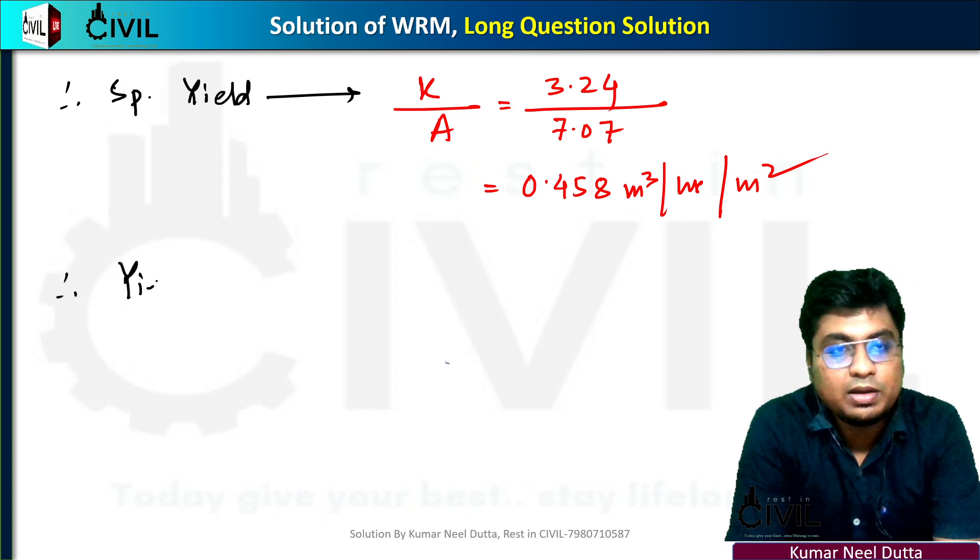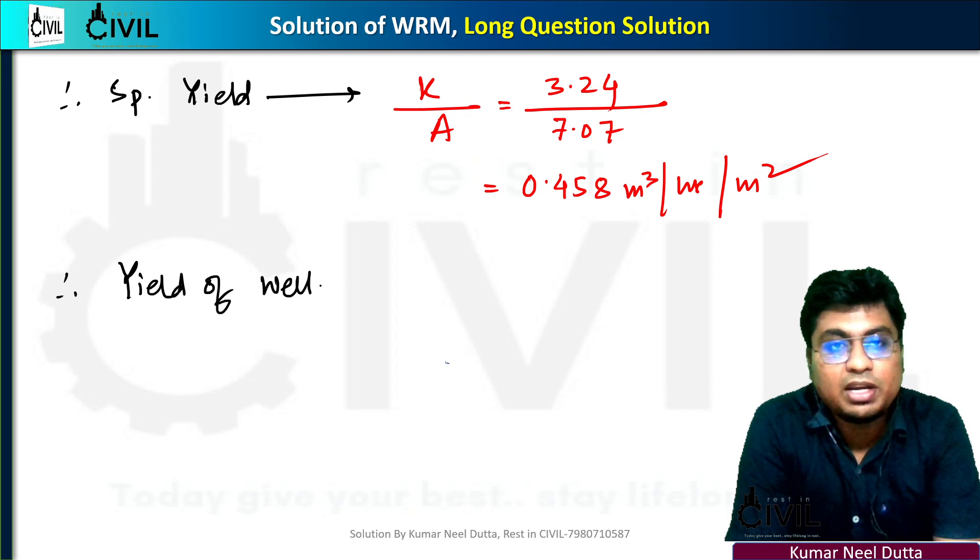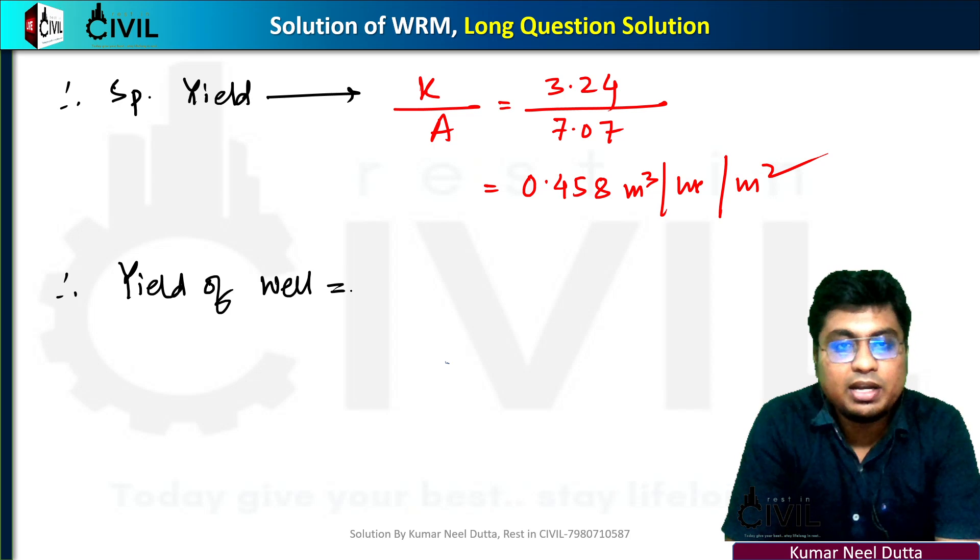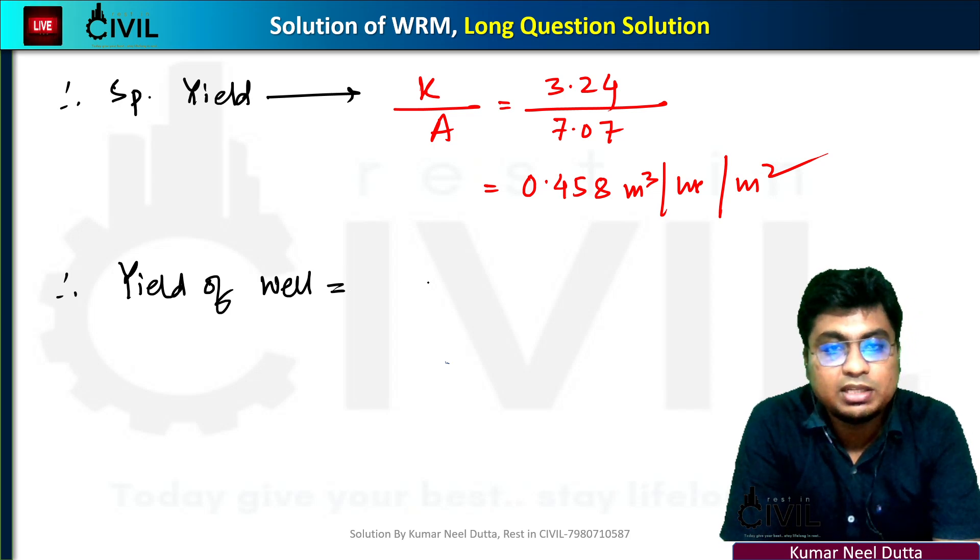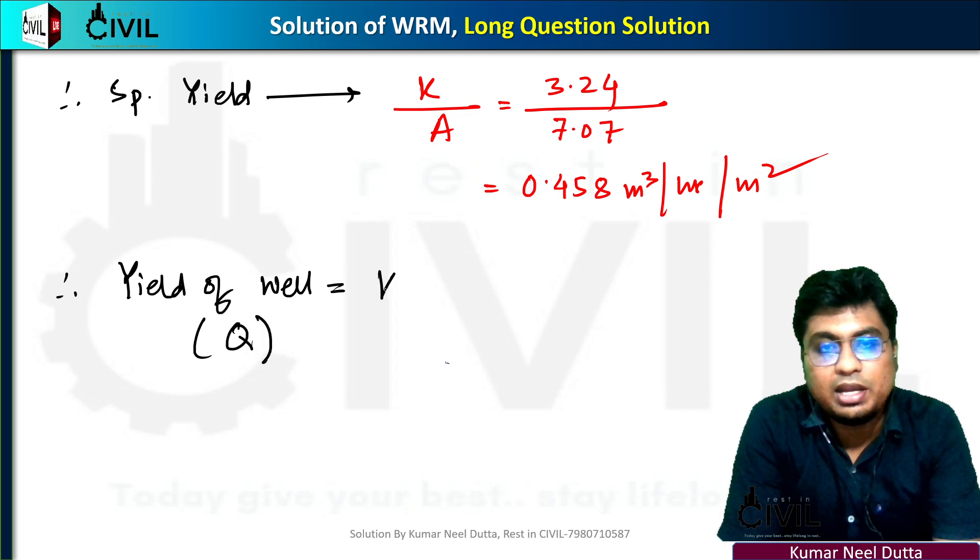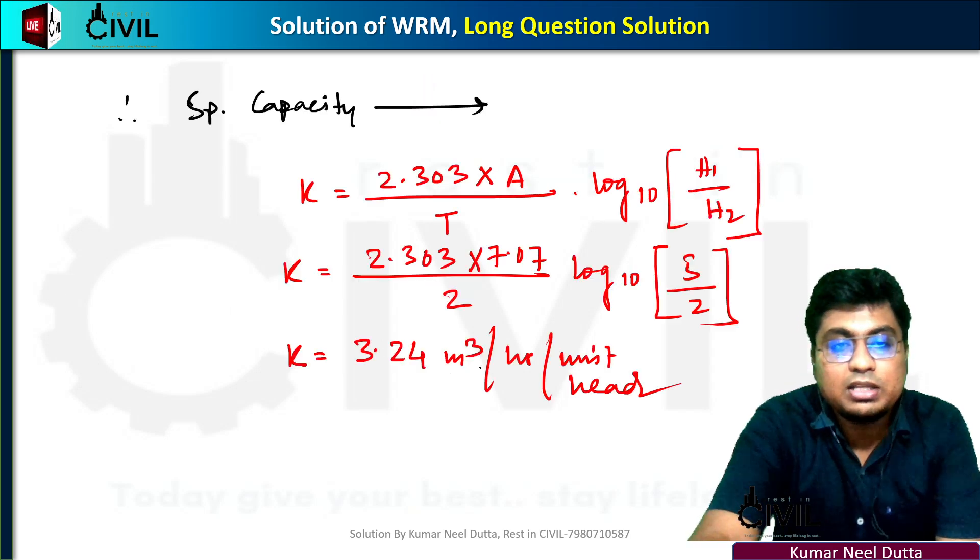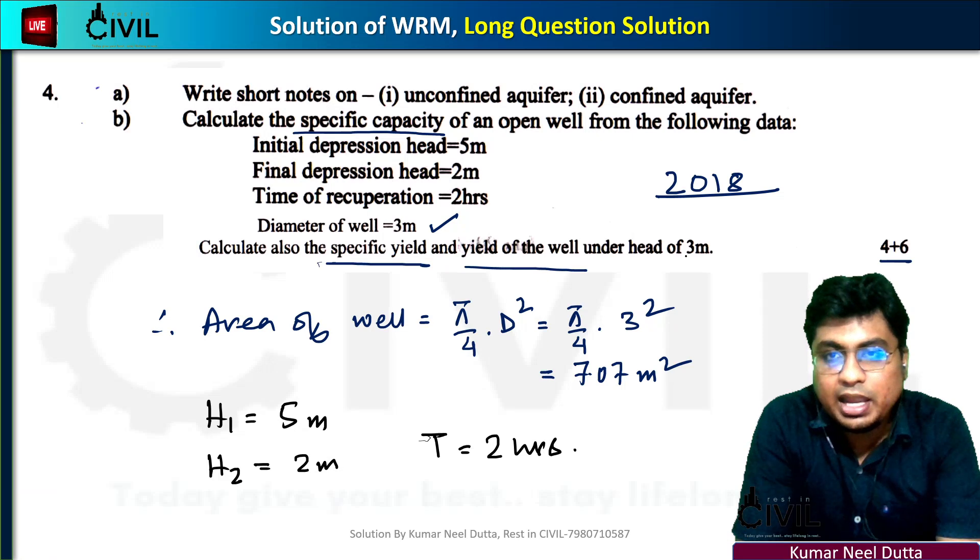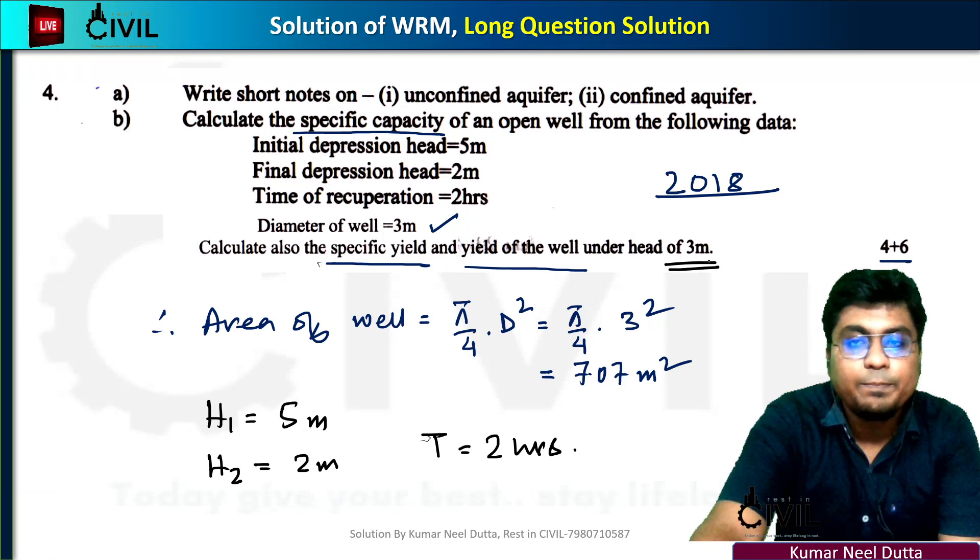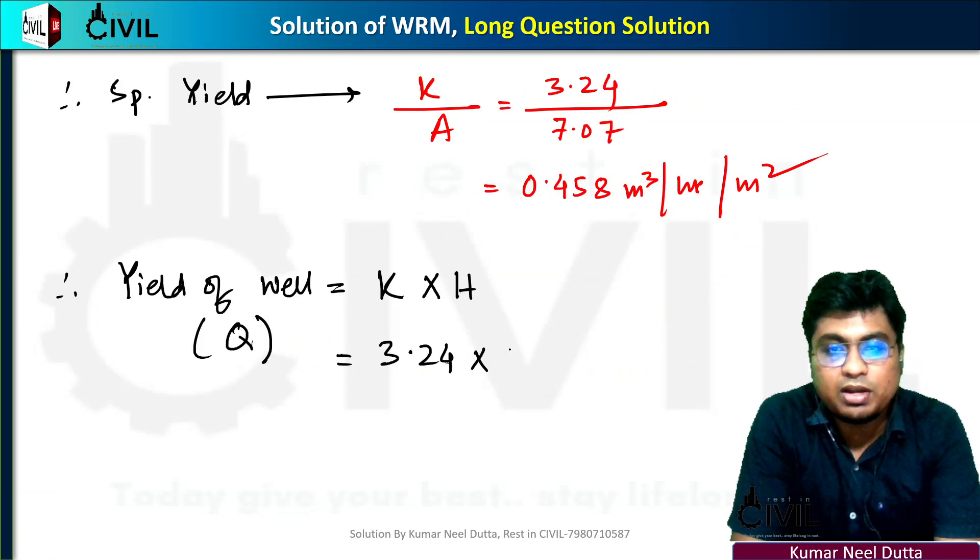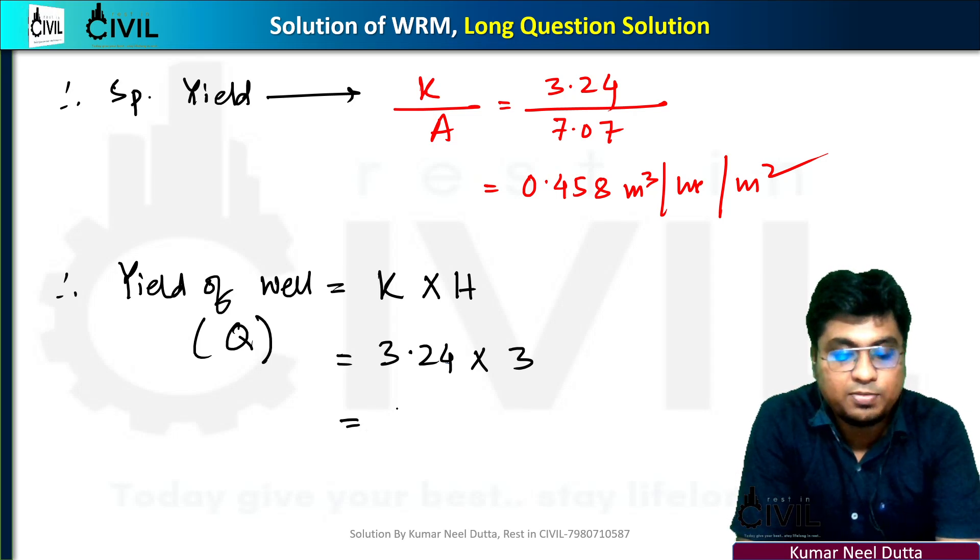Next, calculate the yield of the well. Yield of well equals K times H, where K is 3.24.